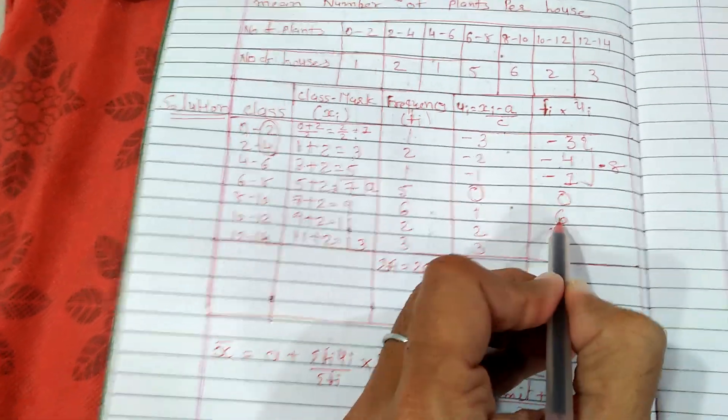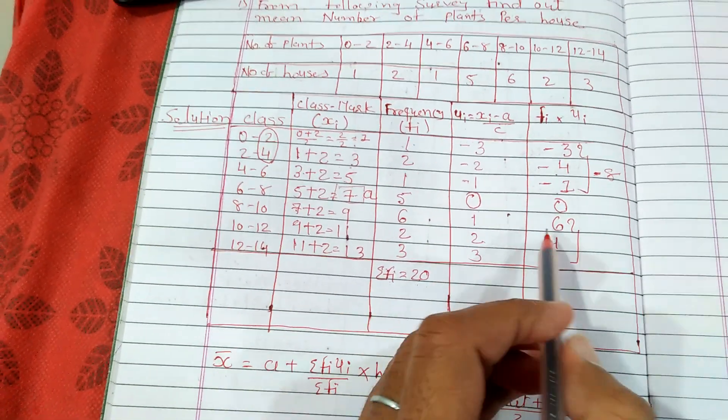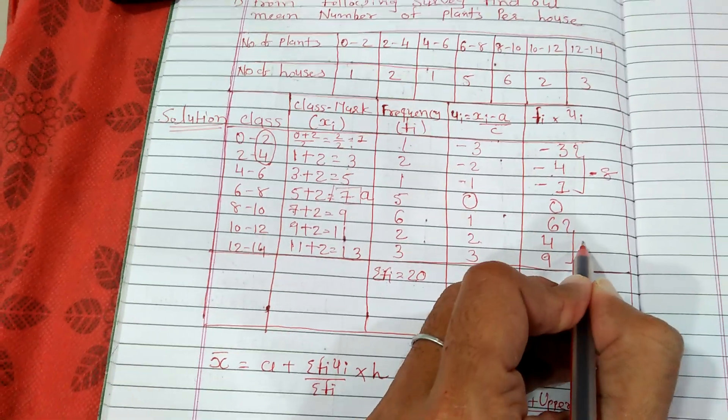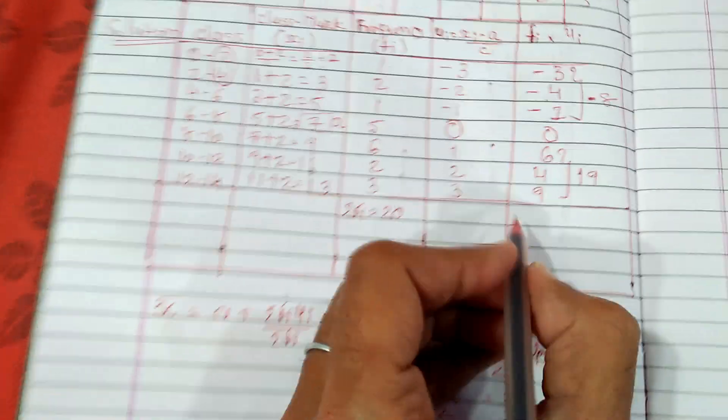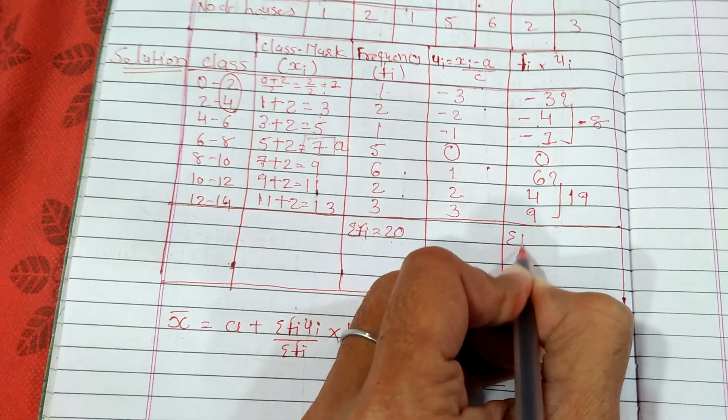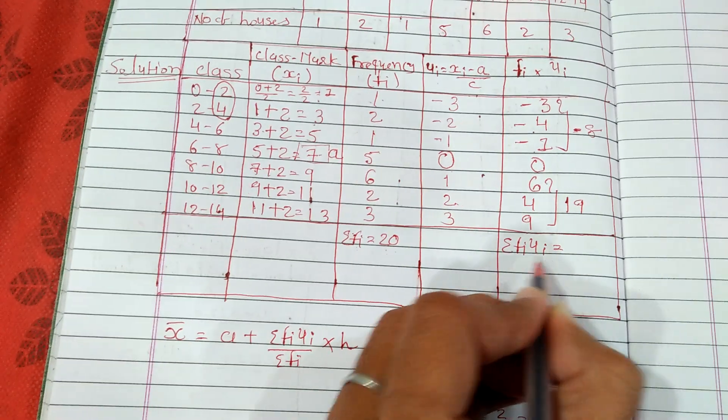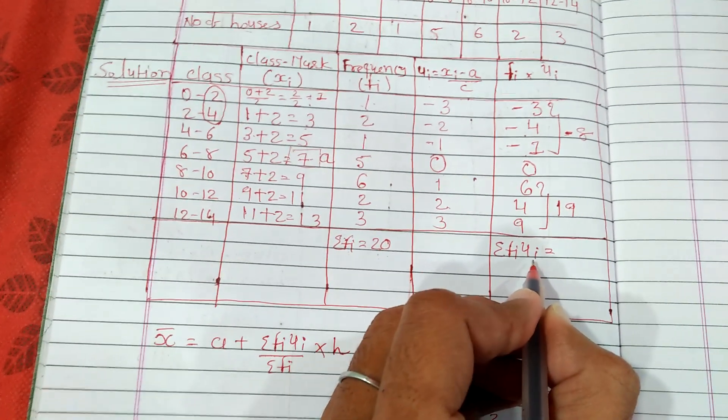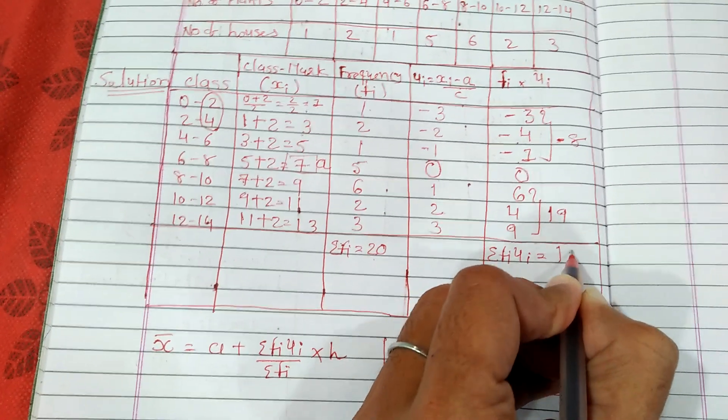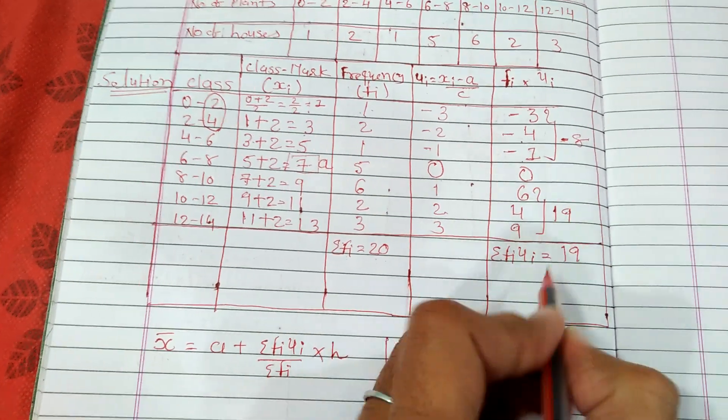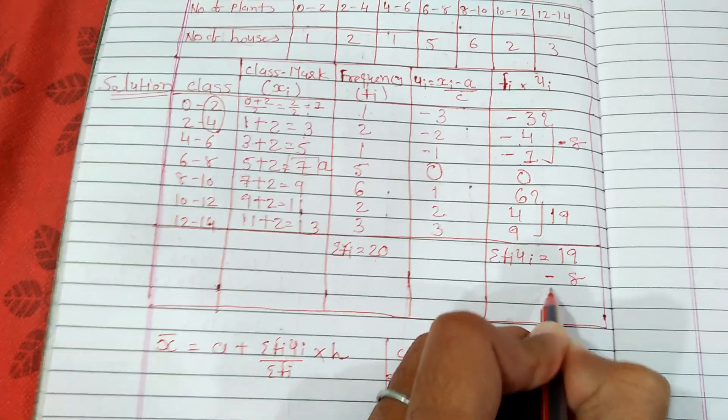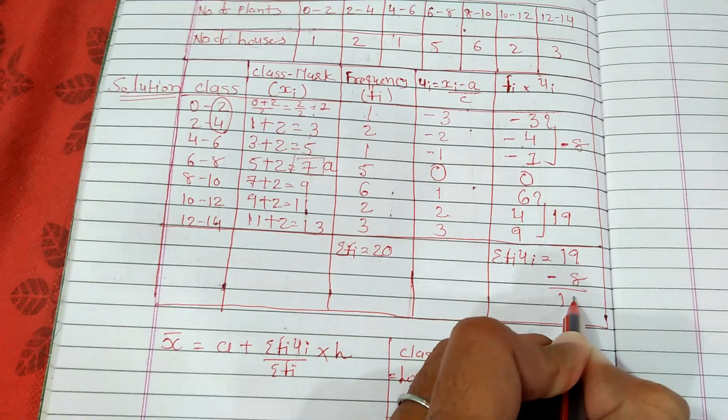Now add all these negative numbers: 3 plus 4 equals 7, plus 1 equals 8. So here it will be minus 8. Now add the positive numbers: 6 plus 4 equals 10, plus 9 equals 19. So here we'll find out Sigma Fi ui. Sigma stands for sum. Sum of Fi ui will be 19 minus 8, which equals 11.